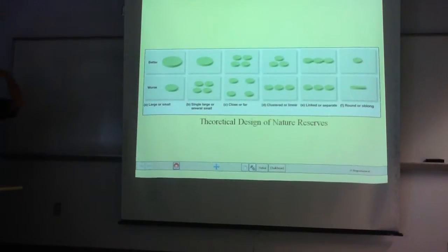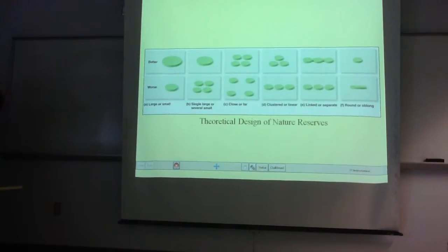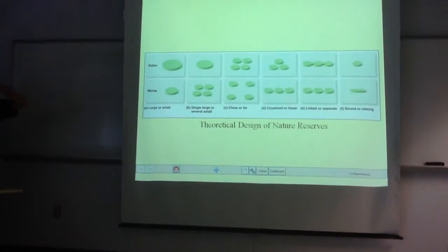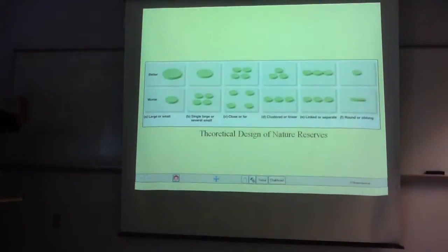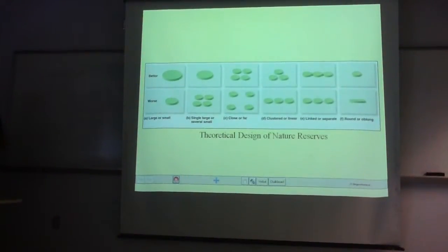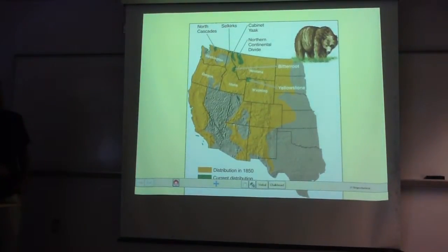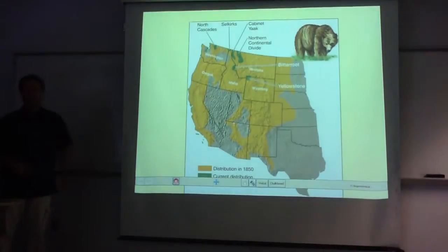You want to reduce those edges and have more center habitat. Think about all these things that go into play — it's not as simple as just telling everybody not to hunt here. You really want to think strategically about how you set up a national park or preserve to try to conserve biological diversity.